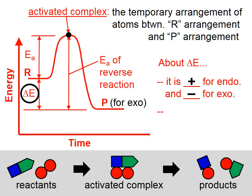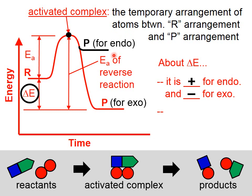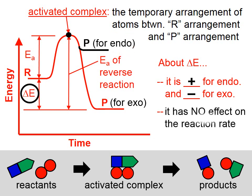This diagram shows the products having less energy than the reactants, so this is an exothermic process. If we modified this graph to show an endothermic process, we would draw the products up here higher than the reactants.